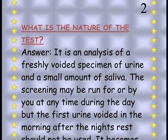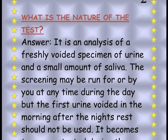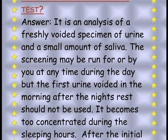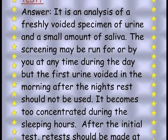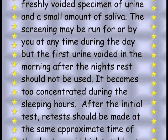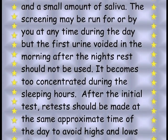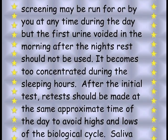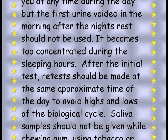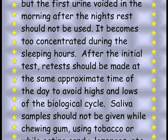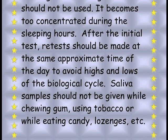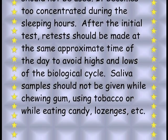What is the nature of the test? It is an analysis of a freshly voided specimen of urine and a small amount of saliva. The screening may be run at any time during the day, but the first urine voided in the morning after a night's rest should not be used — it becomes too concentrated during the sleeping hours. After the initial test, retests should be made at the same approximate time of day to avoid highs and lows of the biological cycle. Saliva samples should not be given while chewing gum, using tobacco, or while eating candy, lozenges, or similar substances.